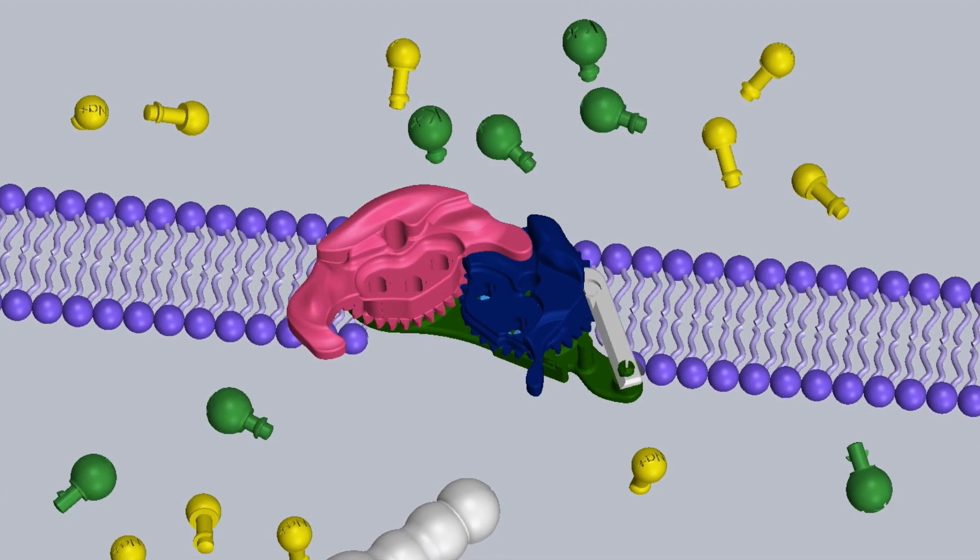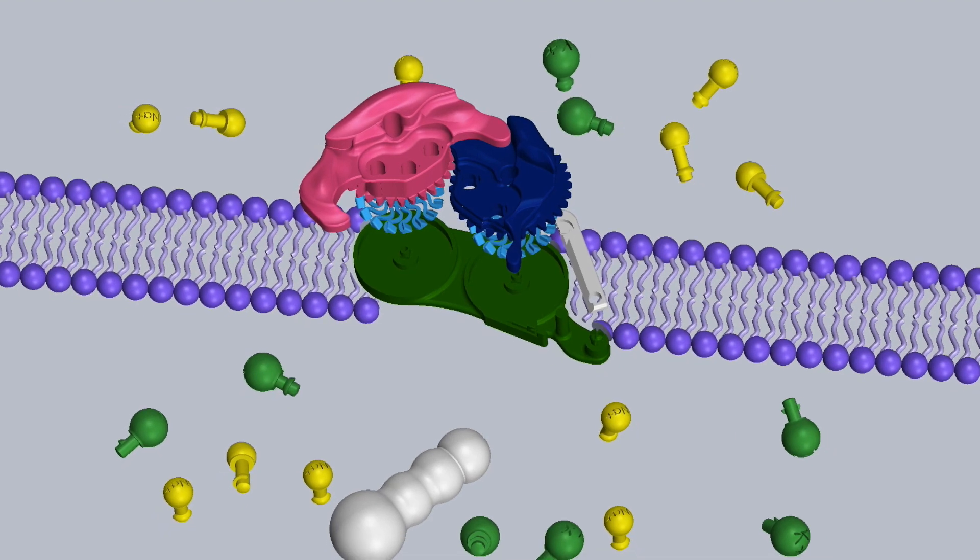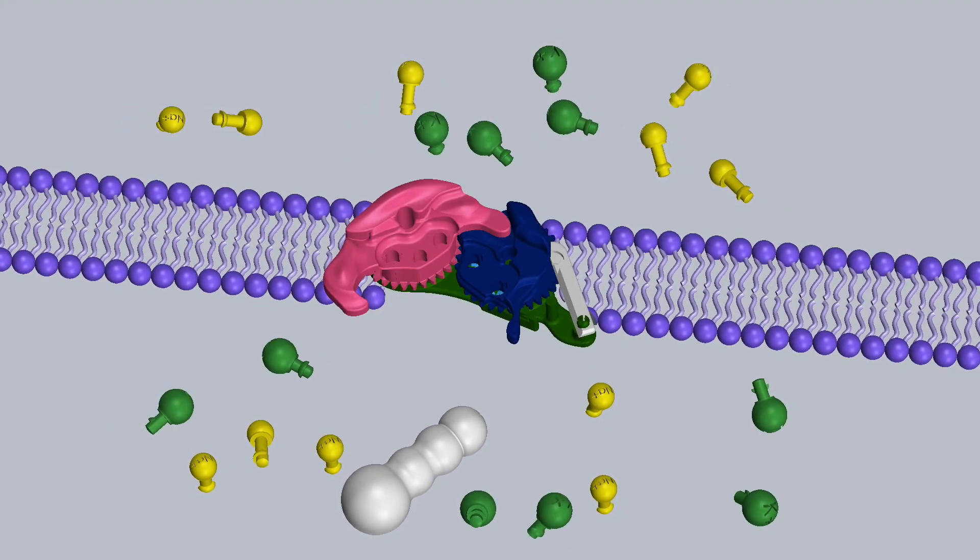This is a model of a sodium-potassium pump that can be manufactured using a 3D printer. The biological functions of the pump are mimicked in this model through a series of gears and ratchets.